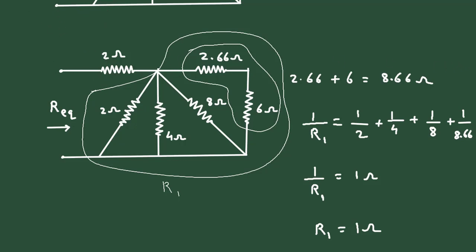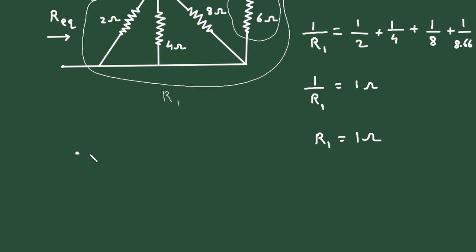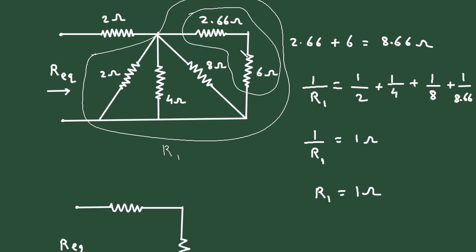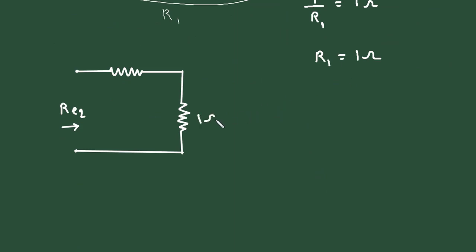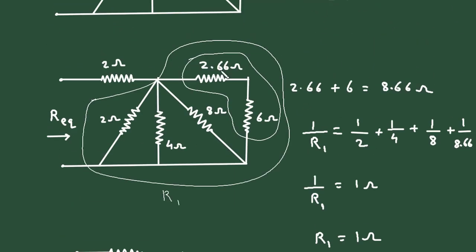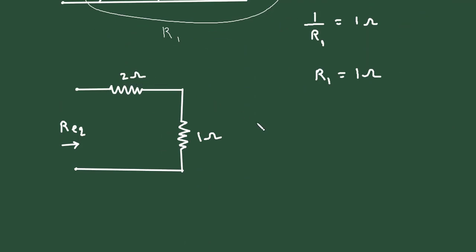So finally, this is R equivalent. We can replace all these resistors with a single resistance of 1 ohm. So this will be of 1 ohm and this 2 ohm as it is.